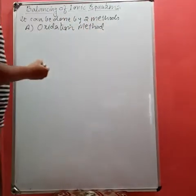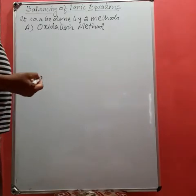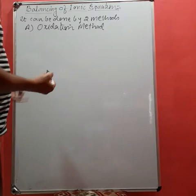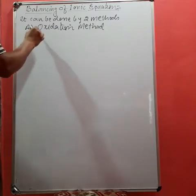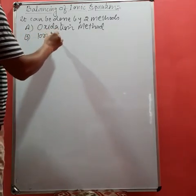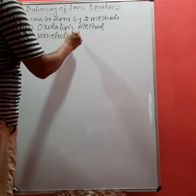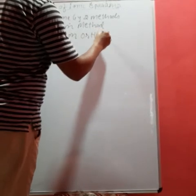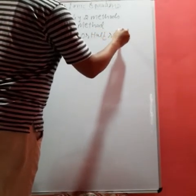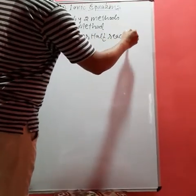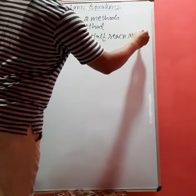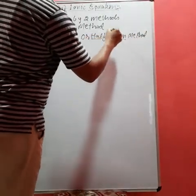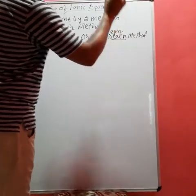In the oxidation method, we check whether the oxidation number of species increases or decreases. The second method is known as the ion-electron or half reaction method. In this method, we write two half reactions or half equations.